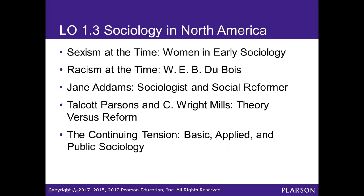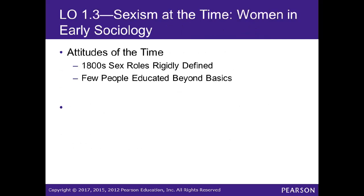Moving to sociology in North America: during this era, sexism was prevalent, but women were active in sociology as well. We'll discuss W.E.B. Du Bois, Jane Addams, Talcott Parsons, C. Wright Mills, and others. Back in the 1800s, sex roles were rigidly defined and education beyond basic grades was a luxury. There's a whole chapter on sex, gender, and the rise of feminism covering the rights and contributions of women.